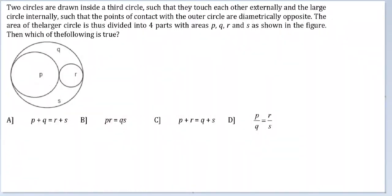Let's look at this question. Two circles are drawn inside a third circle such that they touch each other externally and the large circle internally, such that the points of contact with the outer circle are diametrically opposite.